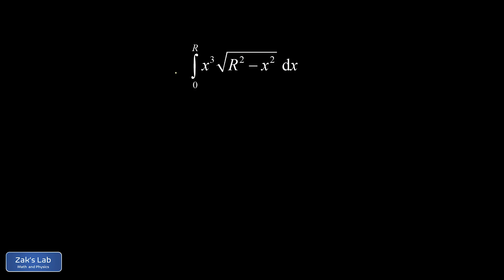In this video, we're computing the integral of x cubed times the square root of r squared minus x squared from 0 to r, where r is a constant.